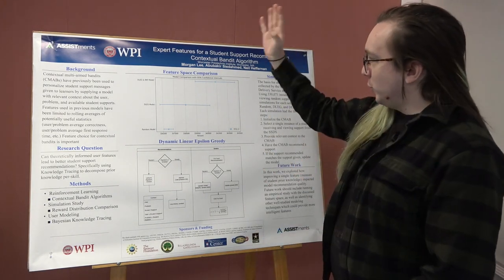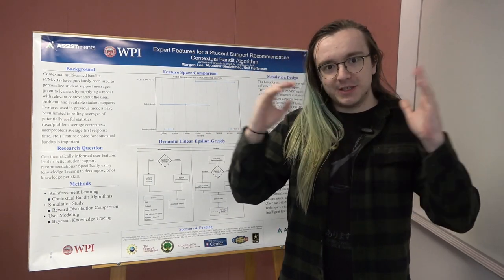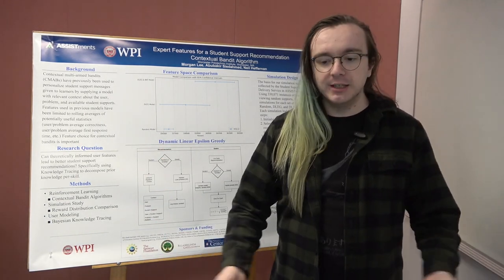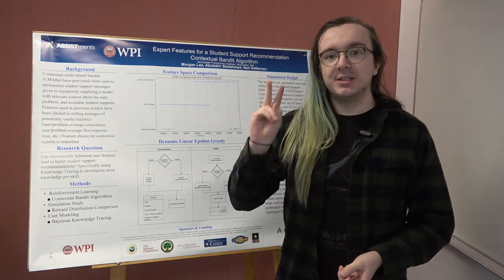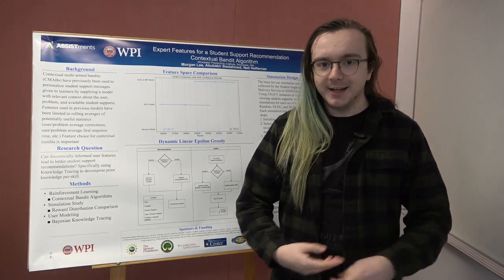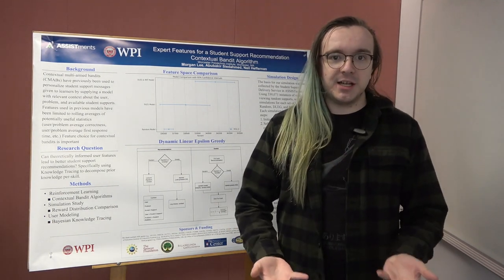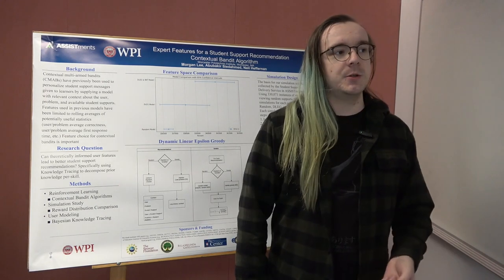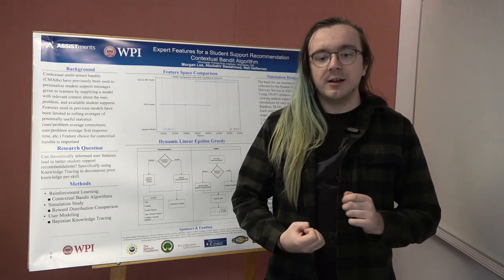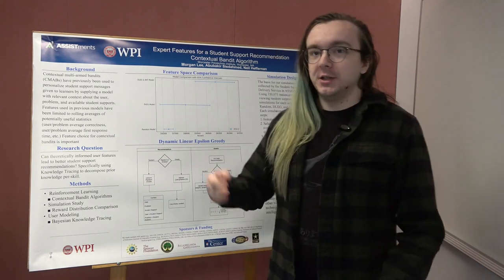In ASSISTments — a free online educational platform used by middle school math students across the country — most problems have at least two educational supports: hints or explanations that a student can request at any time to get instruction. It stands to reason that some of those hints and explanations might be better for some students than others. Some students might need things explained very abstractly, some might need problems broken down into parts. So how do we figure out which hints to give to which students? The answer is reinforcement learning.